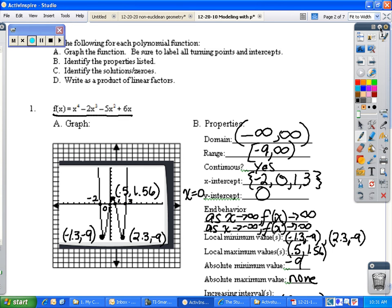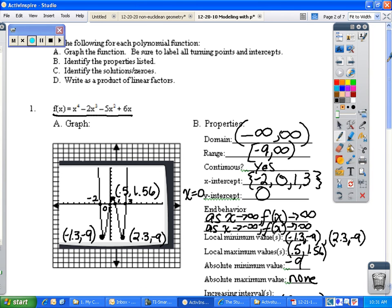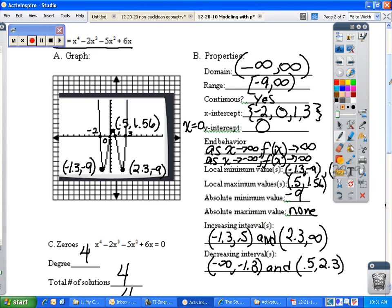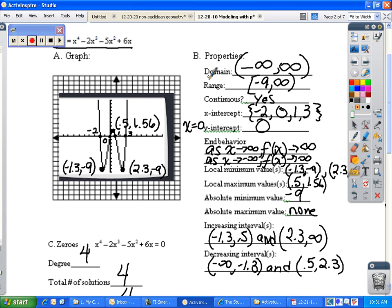Let's go ahead and move on to talk about how we find each of these different elements from the graph. First thing for your domain. Your domain is looking from left to right on the graph. So if you look from left to right, this side of the graph will keep going right, and this side of the graph will keep going left. So therefore your domain is all real numbers, written from negative infinity to positive infinity.